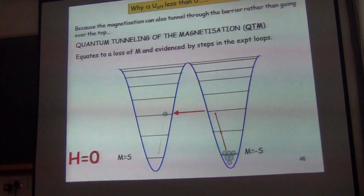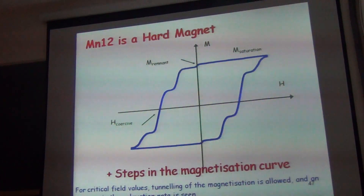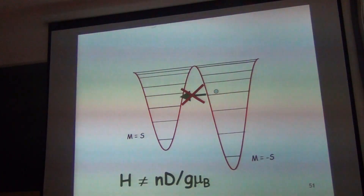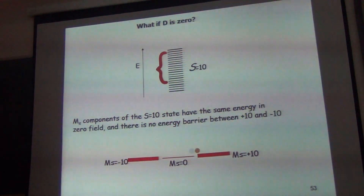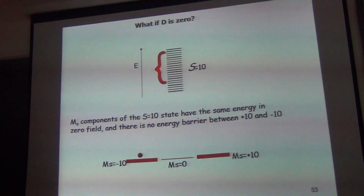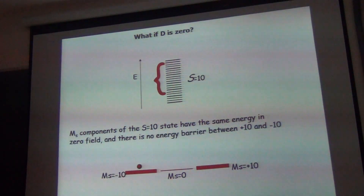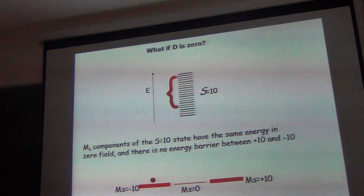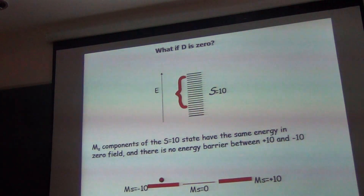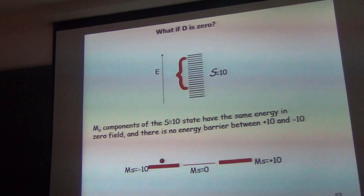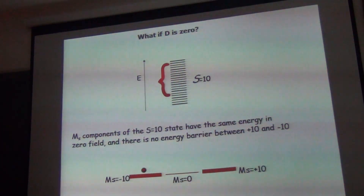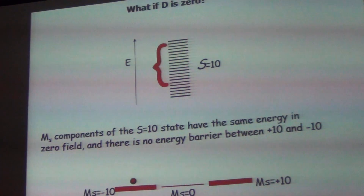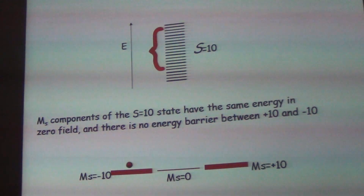What if D is positive? That's the next question. If D is zero, nothing happens — everything is basically one state, electrons can go back and forth with no problem. No relaxation, not a single one. So D is zero means the molecule has no barrier. You need to have a D, otherwise the molecules are not useful.